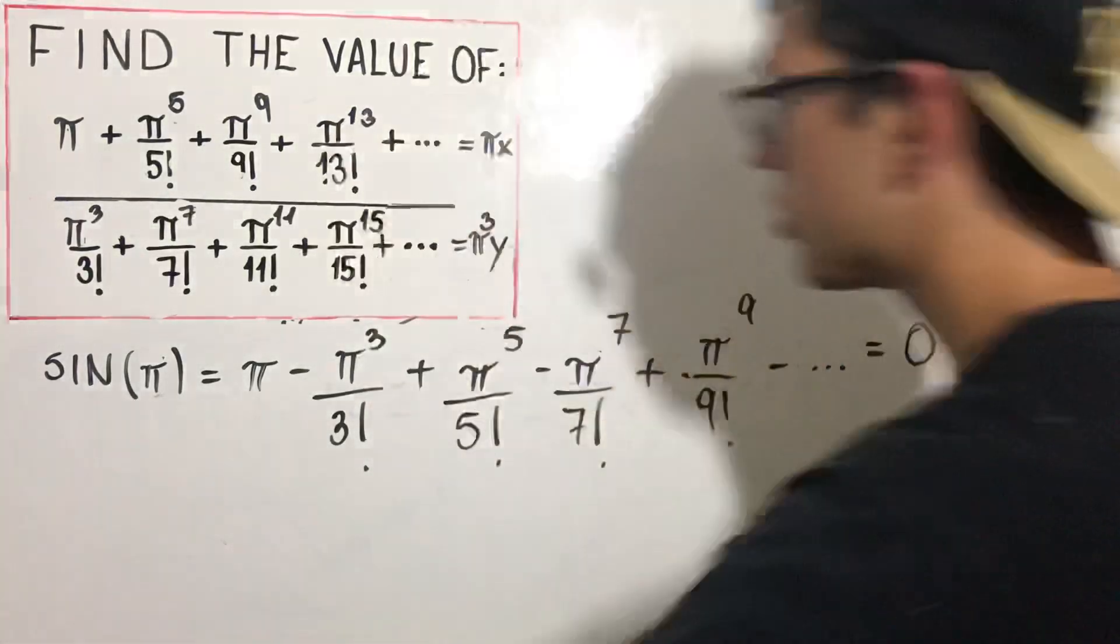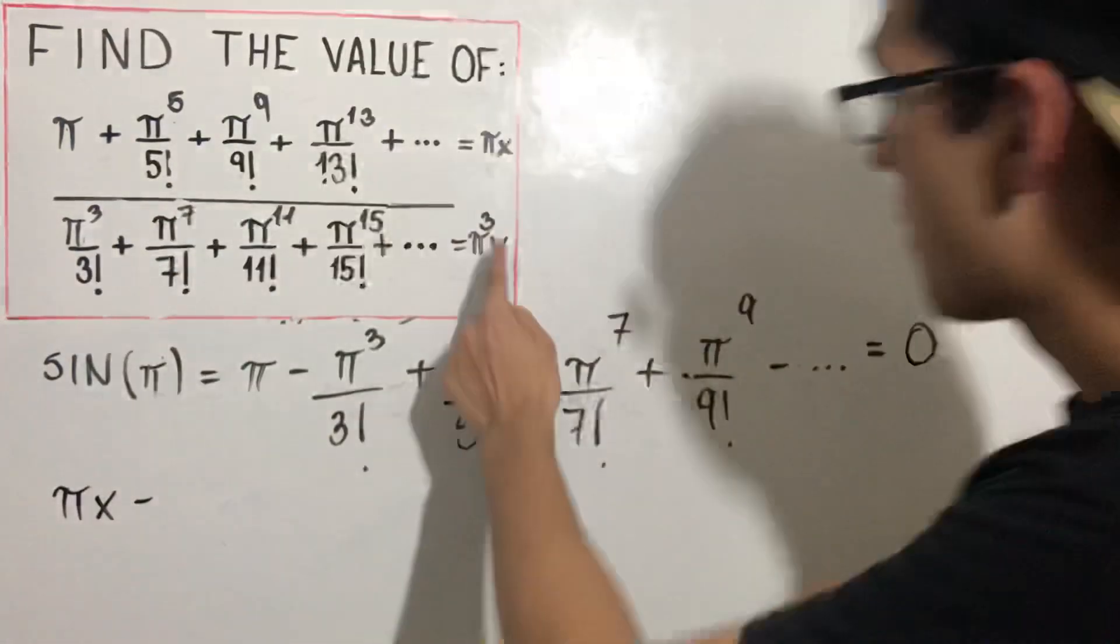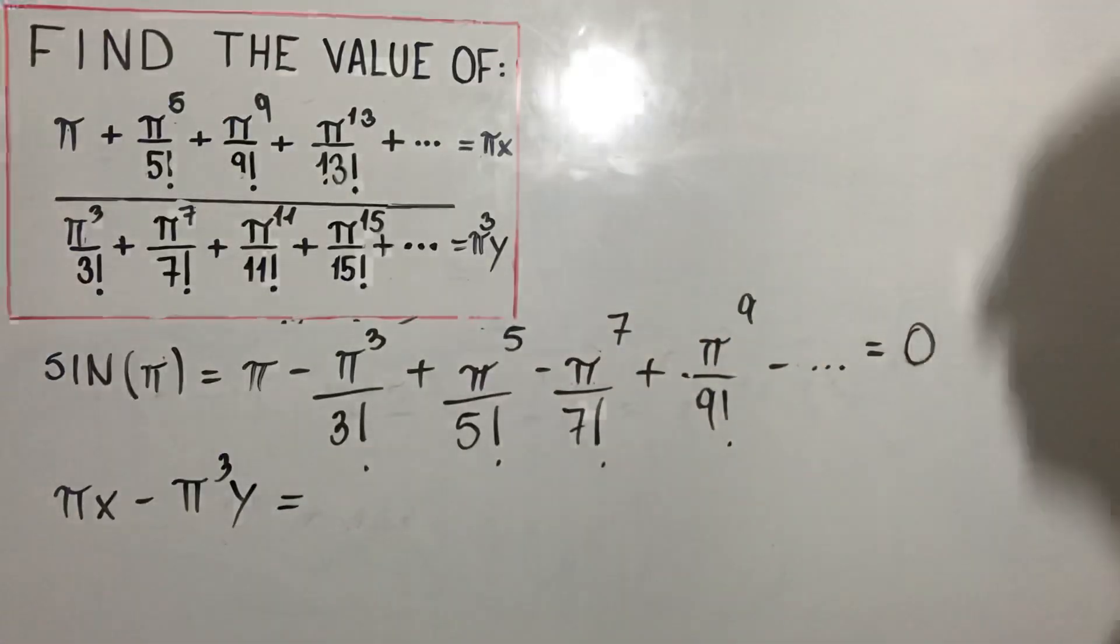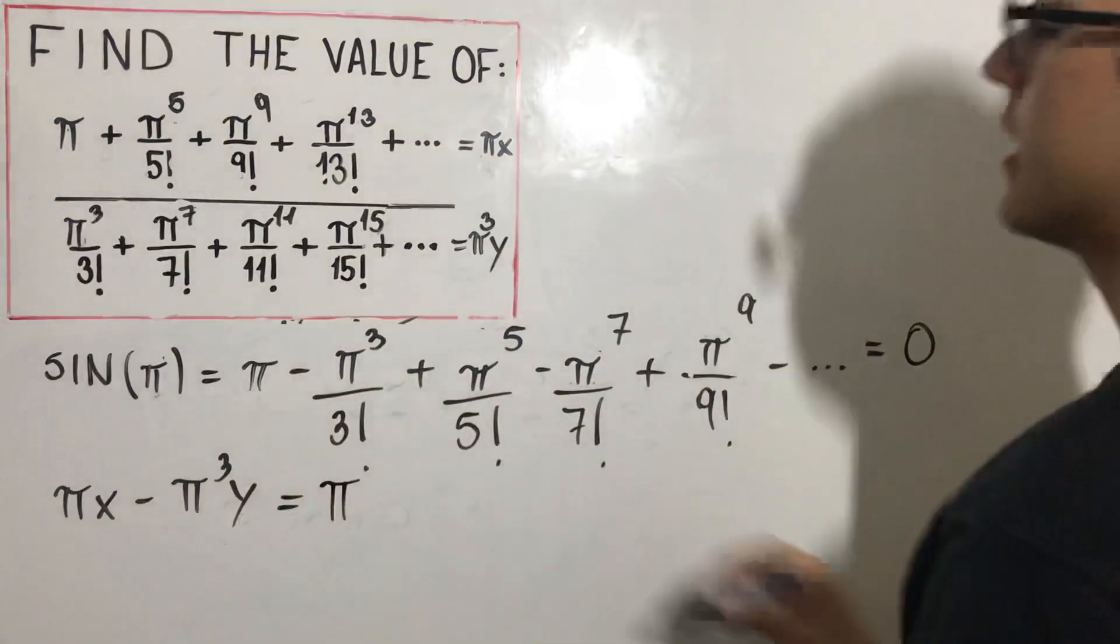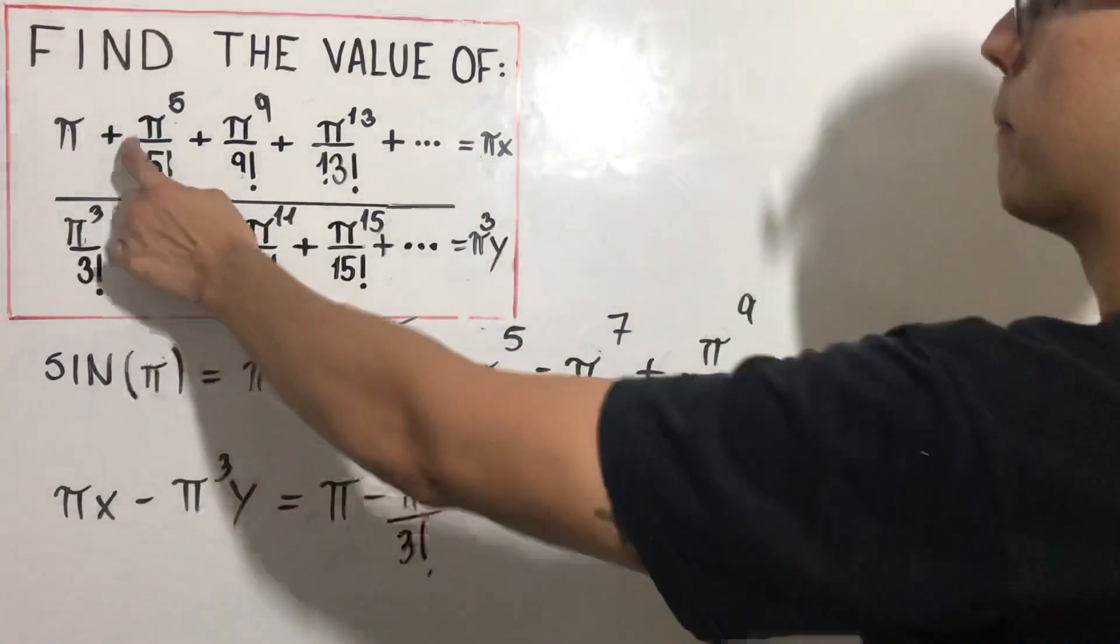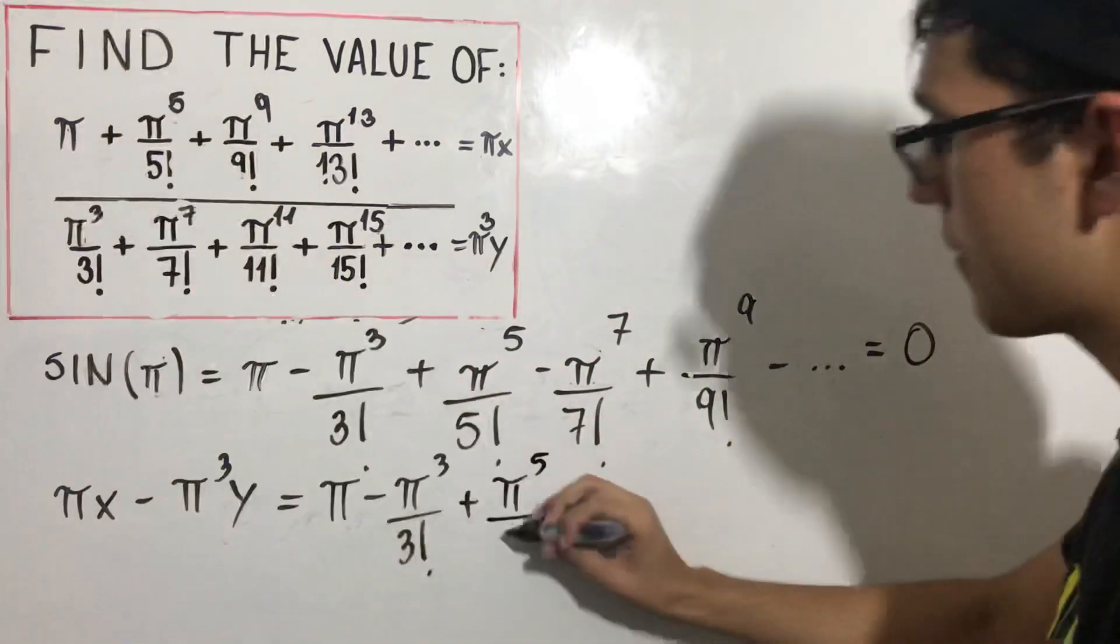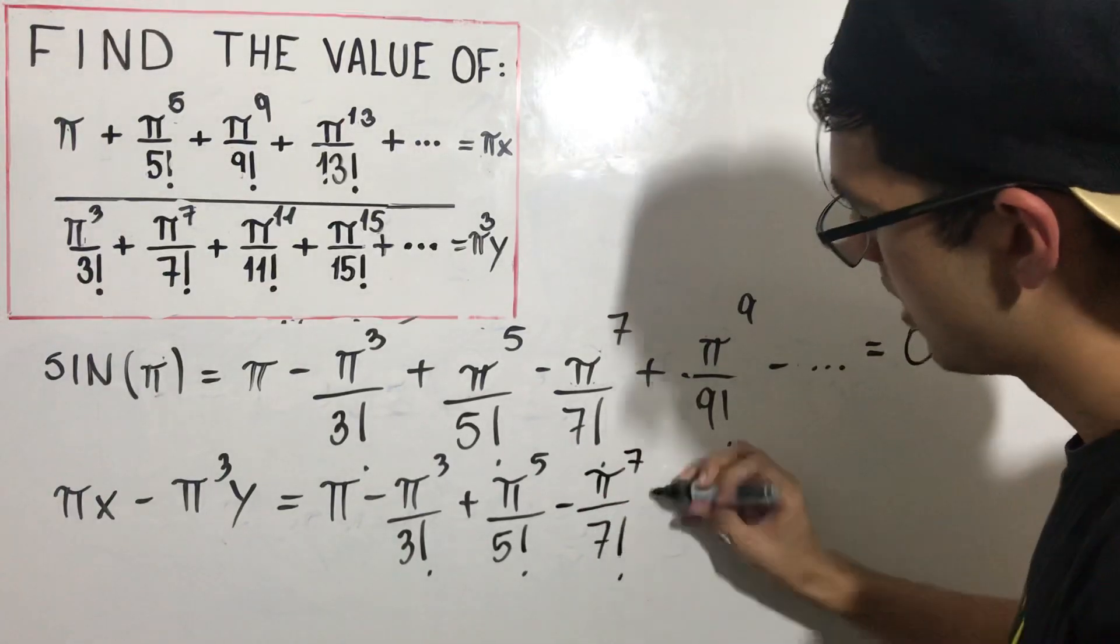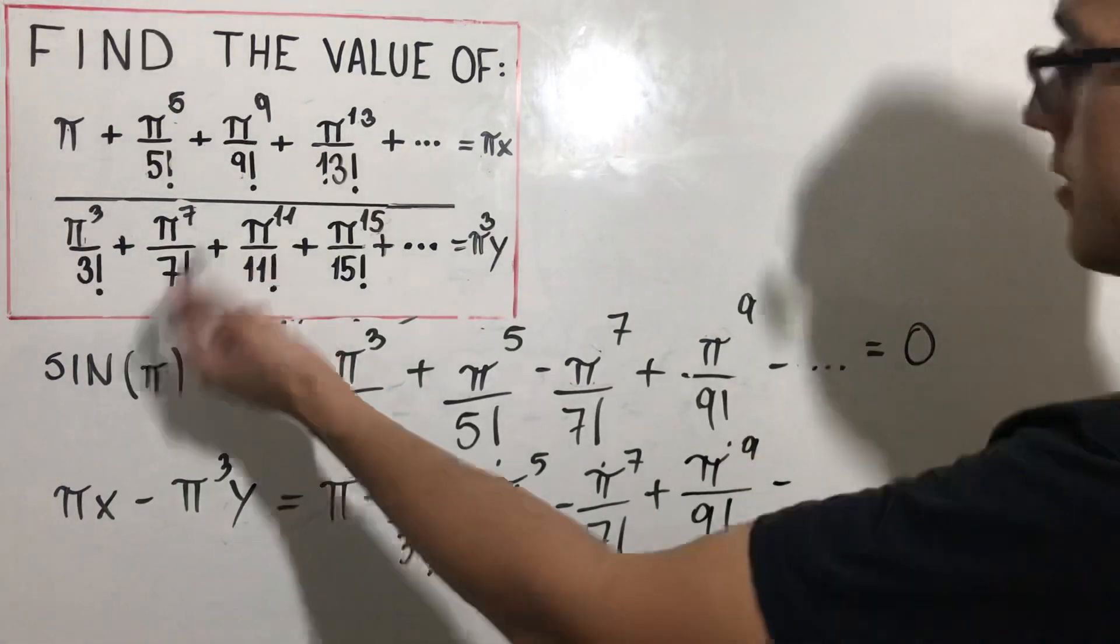What am I going to do now? I want to subtract both of them. So πx minus π³y. This is equal to π minus π³ divided by 3! plus π^5 divided by 5! minus this, plus this, minus and so on.